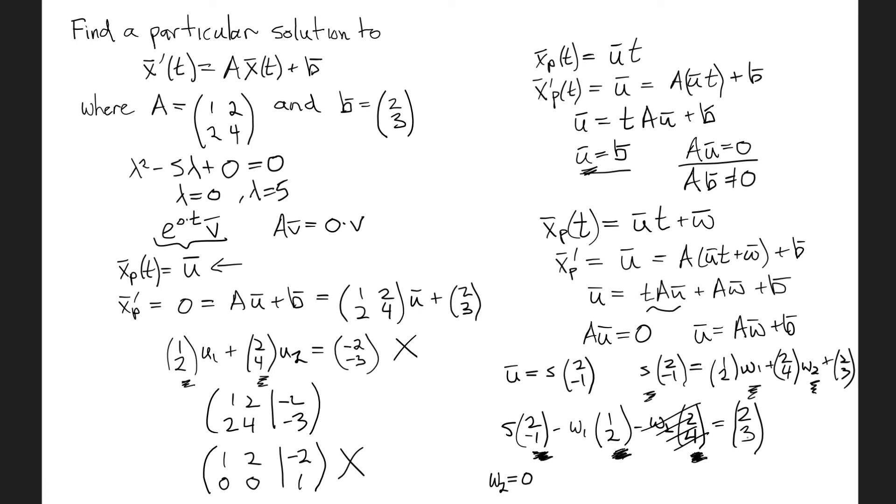And now I'm trying to find an s and a w that make 2, 3. So I'll let you go through the algebra to calculate s and w1, but you'll find that s is 1/5 and w1 is minus 8/5. And we can now use those to assemble the solution xp of t, which is going to be u, that's 1/5 times the vector 2, minus 1 multiplied by t plus w, the vector minus 8/5, 0.